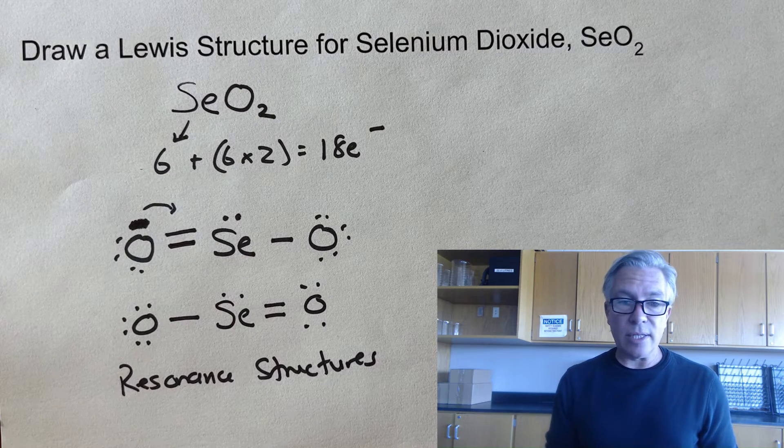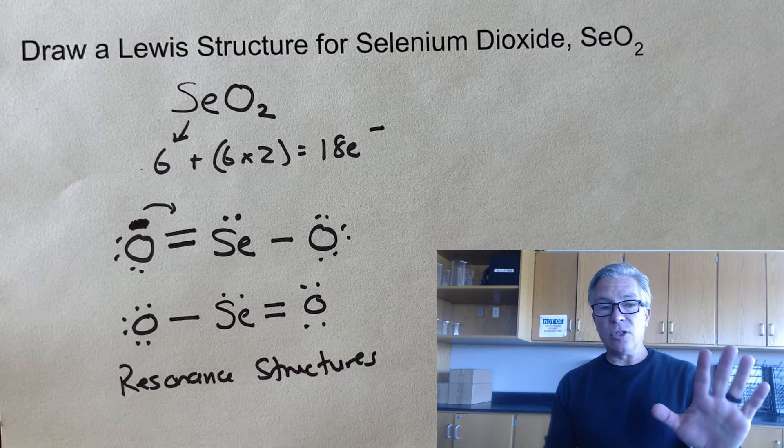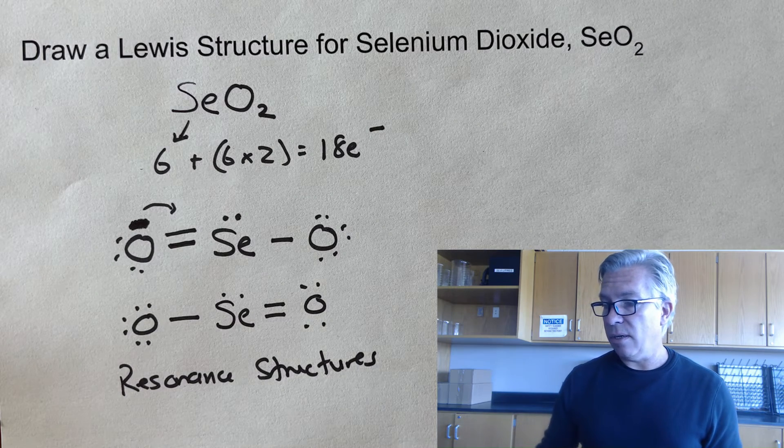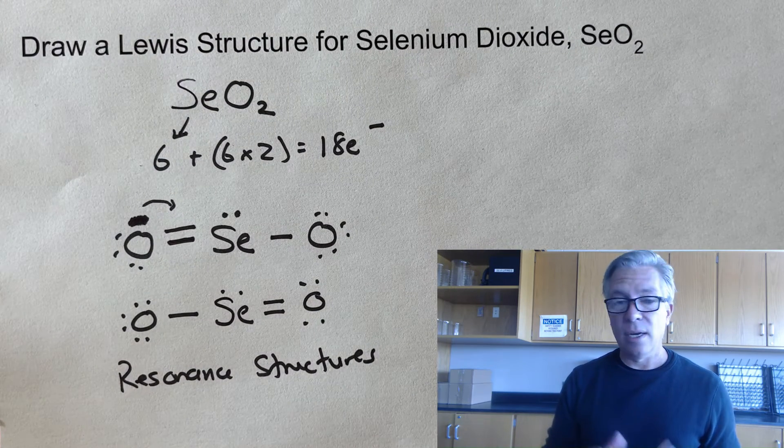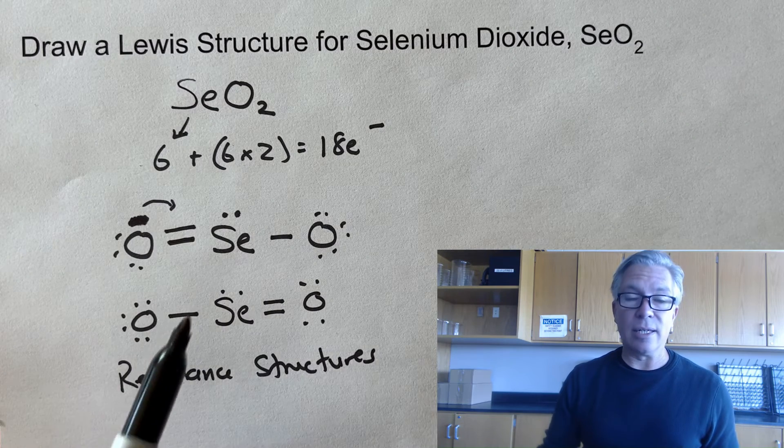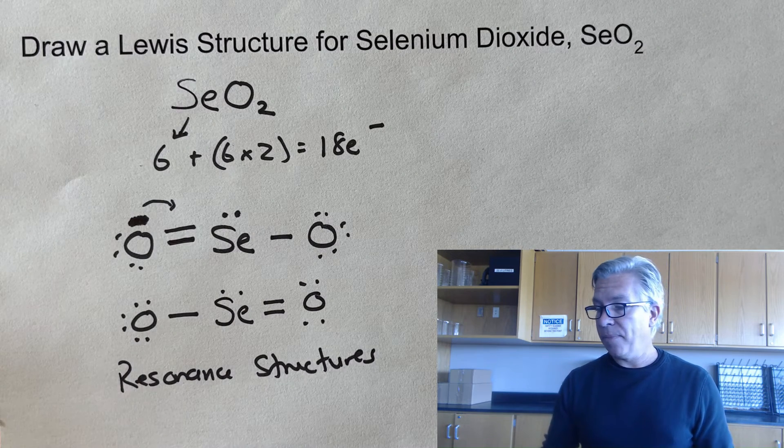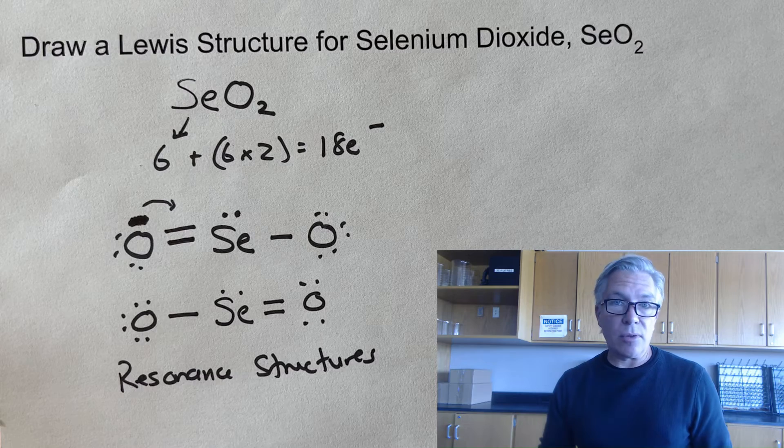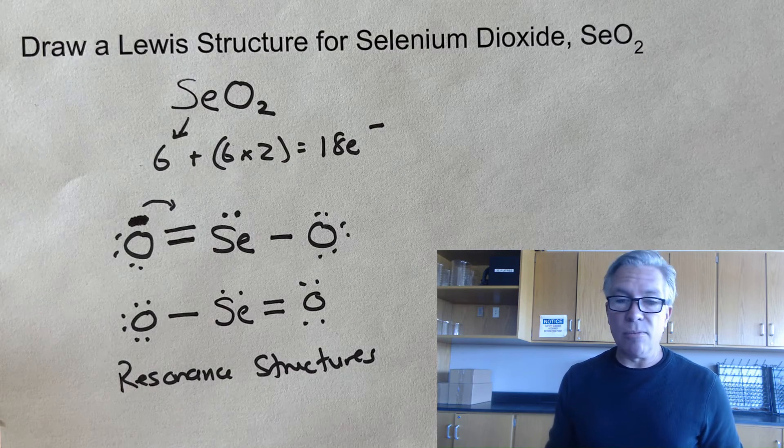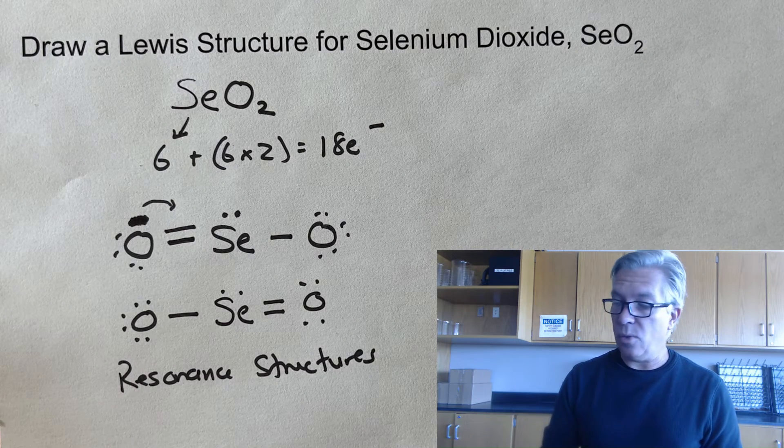And so we call these resonance structures of each other. And so if you ever get a chance to get into a question where it says draw all the resonance forms of a molecule, you can plan on drawing it at least two times and maybe more than that. So just draw both or all of them. And then you'll be more appropriate than just adding or drawing one of them.